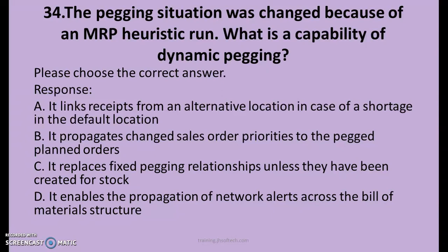34th question. The pegging situation was changed because of an MRP heuristic run. What is a capability of dynamic pegging? A. It links receipts from an alternative location in case of a shortage in the default location. B. It propagates changed sales order priorities to the pegged plan orders. C. It replaces fixed pegging relationships unless they have been created for stock. D. It enables the propagation of network alerts across the bill of material structure. The right answer is A: it links receipts from an alternative location in case of shortage in the default location.